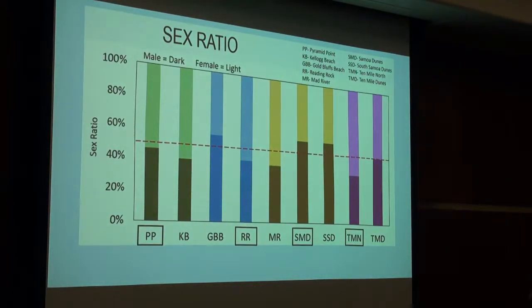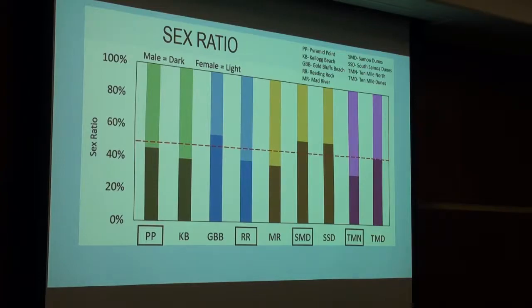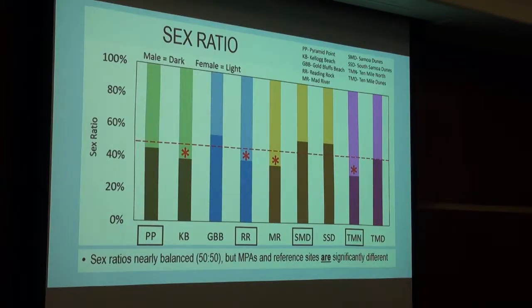Looking at sex ratios, the y-axis shows the percent males and females, with a red line at the 50-50 mark. The lower, darker portion of each bar represents males and the upper, lighter portion represents females. Across the board, most sites are close to that 50-50 mark — about half female, half male red-tailed surf perch across the North Coast region. What differs here from the other data is that all marine protected areas and reference sites are significantly different from one another, with the one exception being Samoa and South Samoa Dunes, which are almost identical.